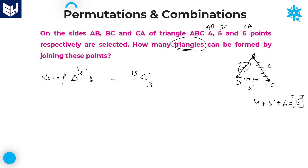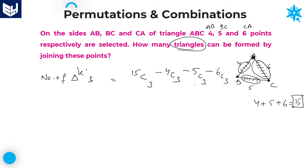You need to subtract the number of selections from those collinear points. Subtract 4C3 for the 4 collinear points on AB. Similarly, on side BC there are 5 collinear points — you cannot form a triangle using only those 5 points, so subtract 5C3. And on side AC there are 6 collinear points, so subtract 6C3.